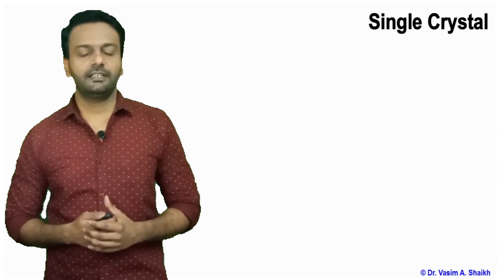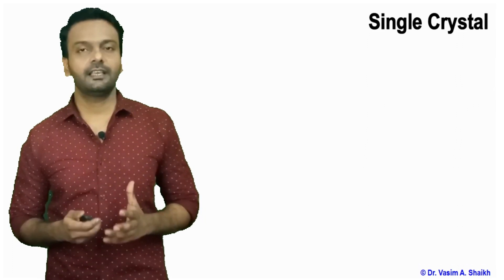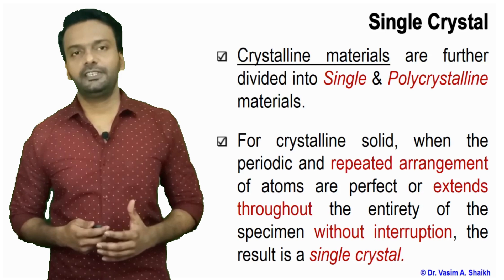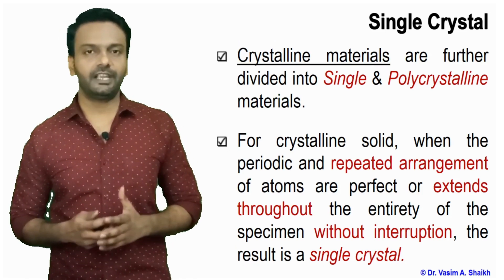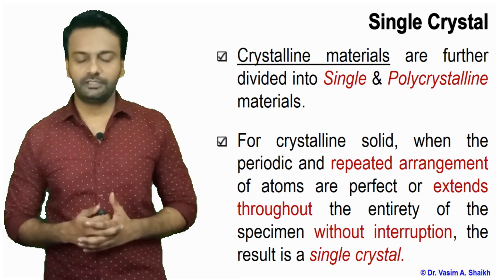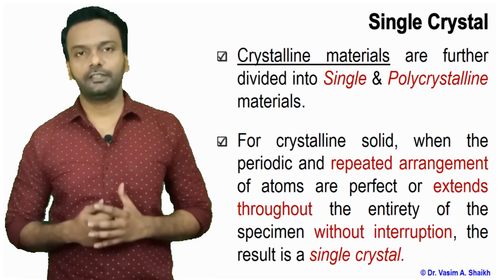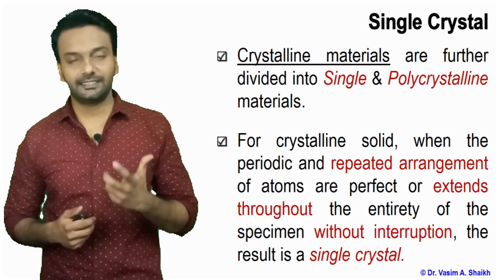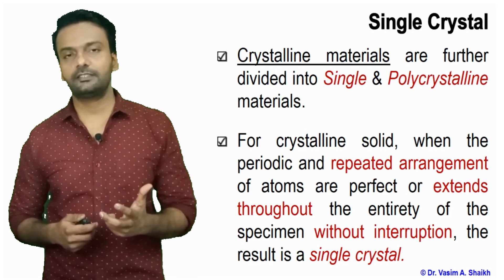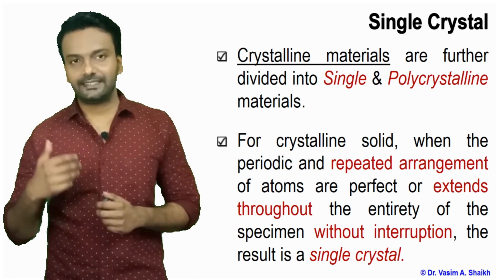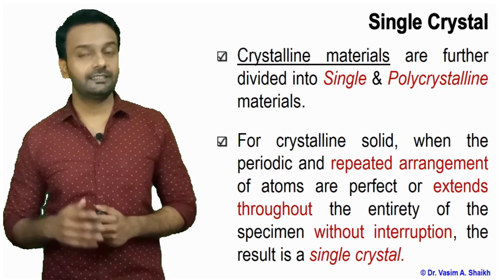Let us start with single crystal. Crystalline materials are broadly classified into single crystals and polycrystalline material. In single crystal material, the arrangement of atoms and the unit cell goes on without any interruptions — meaning no grain boundaries. The atoms keep repeating in terms of the unit cell and the material in its entirety is like a single crystal without any hindrance. For a crystalline solid, when the periodic repeated arrangement of atoms extends throughout the entirety of the specimen without any interruption, the result is a single crystal material.